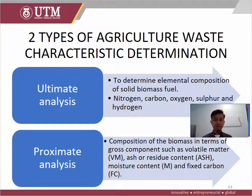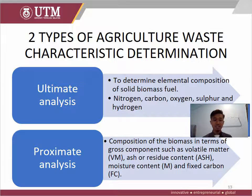There are two types of agricultural waste characteristic determination. First, ultimate analysis, and second, proximate analysis. Ultimate analysis is used to determine the elemental composition of solid biomass fuel such as nitrogen, carbon, oxygen, sulfur, and hydrogen. Proximate analysis determines the composition of biomass in terms of gross components such as volatile matter, ash, moisture content, and fixed carbon.